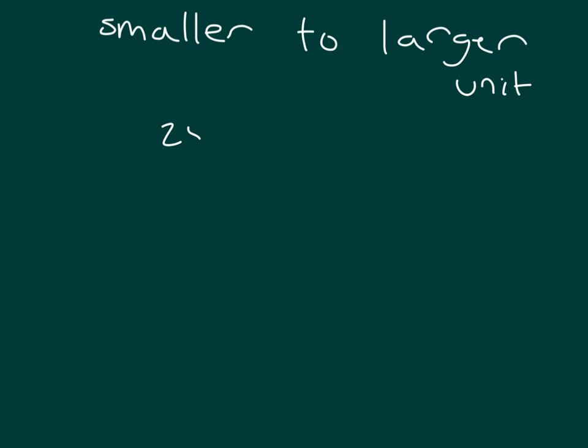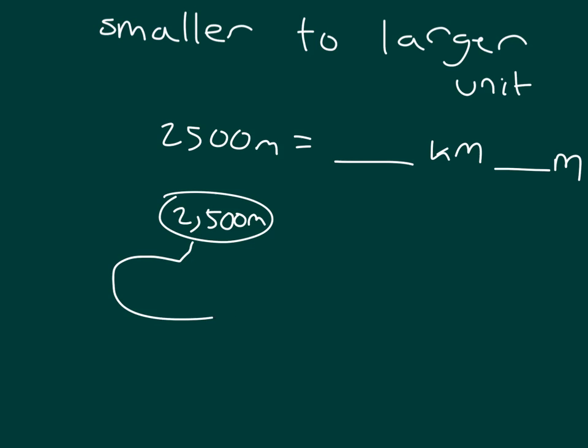Let's see what happens when we go from a smaller unit to a larger unit. So let's express 2,500 meters in kilometers. And if there is anything left over, then we would still have meters as well. Let's break it apart. If we have 2,500 meters, let's break it apart by thousands. And the reason we're breaking it apart by thousands is because we know that 1,000 meters equals 1 kilometer.